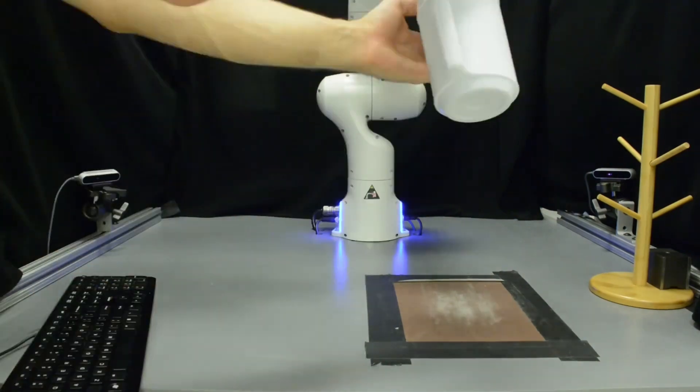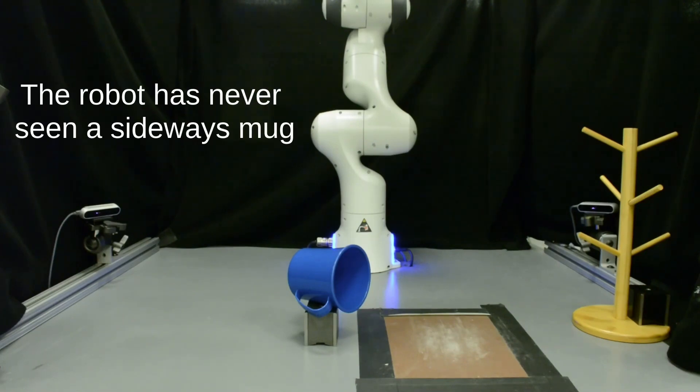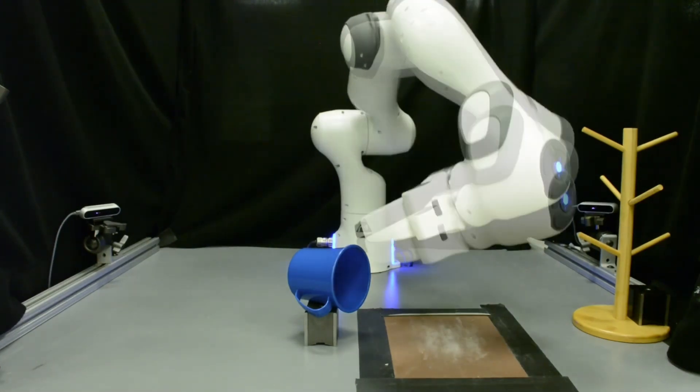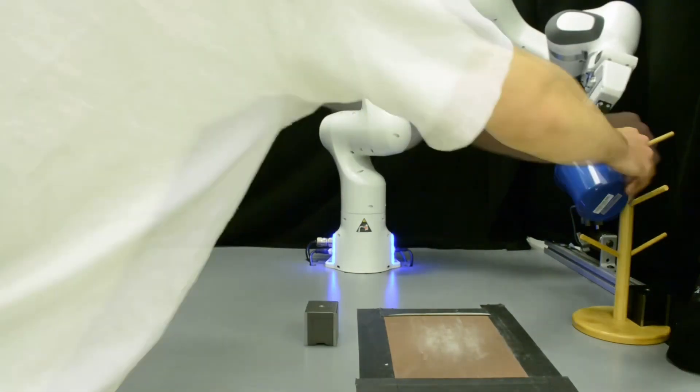Suppose a robot is provided with a demonstration of grasping an upright mug and hanging it on a rack. We propose a system that can use just a small handful of these demonstrations to repeat the task on a new mug, which has a different shape and is placed in a never-before-seen pose.